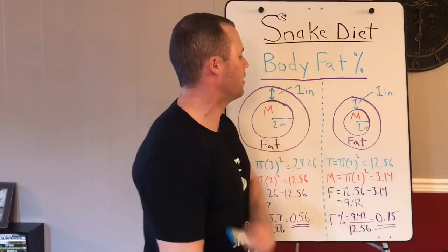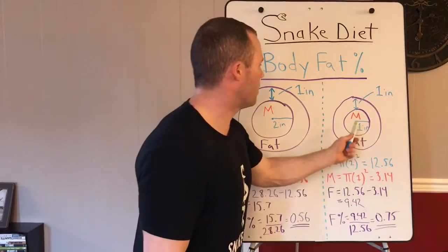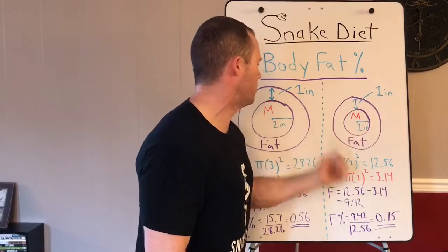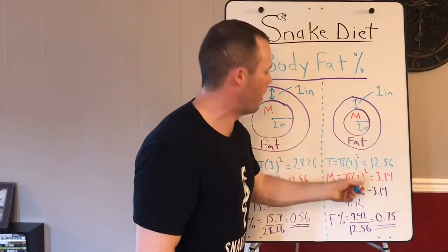The muscle, pi r squared again, but the muscle on this guy's only one inch versus the two on the big guy. So it's gonna be pi times one squared equals 3.14 for the area of the inner circle.